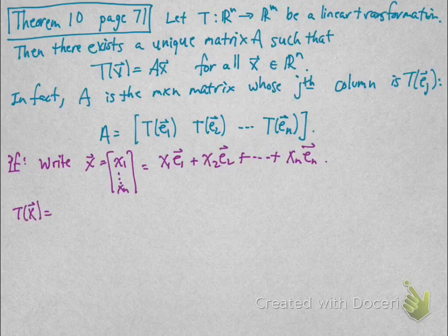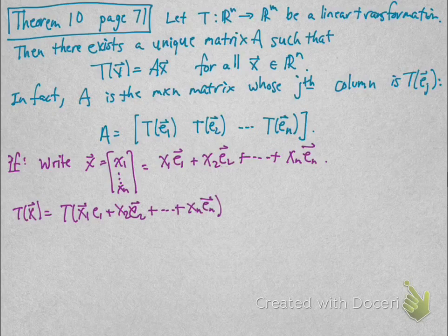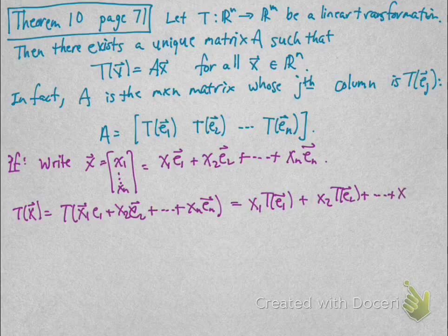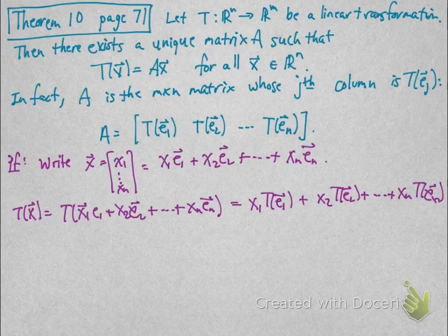Now we use linearity of the transformation T. So T(x) is T evaluated at x_1 E_1 plus x_2 E_2 and so on. Then I can pull out the scalars: x_1 times T(E_1) plus x_2 times T(E_2) all the way up to x_n times T(E_n).